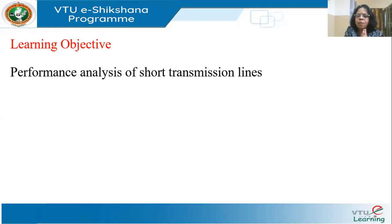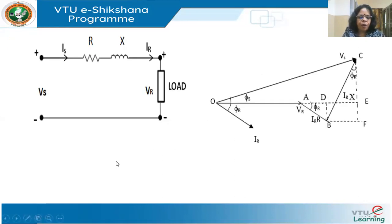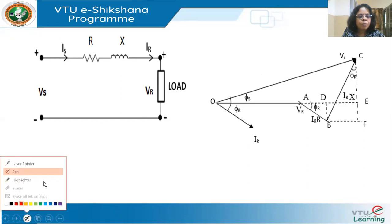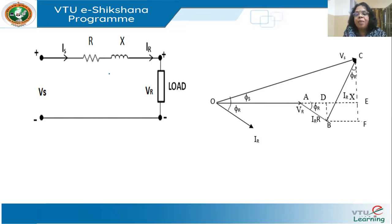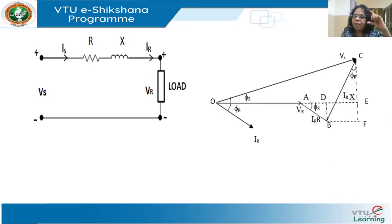This is the simplest model. Here R is the lumped resistance of the line and X is the lumped reactance of the line. For a transmission line we specify the resistance and reactance per kilometer. Multiplying by the length of the line gives the lumped values of R and X. The line is simply modeled as a series impedance. The shunt capacitance between the line and the ground is neglected. This is the short line model.